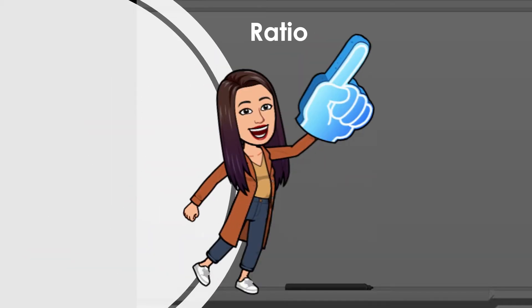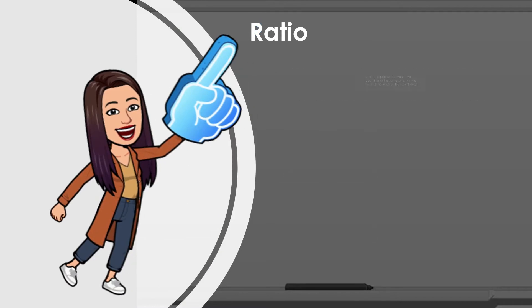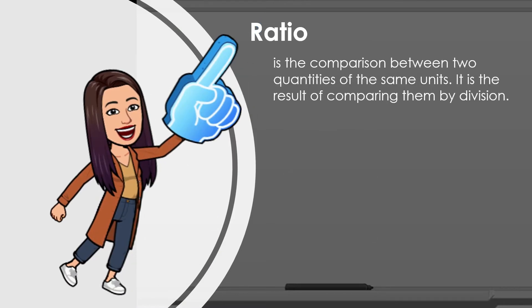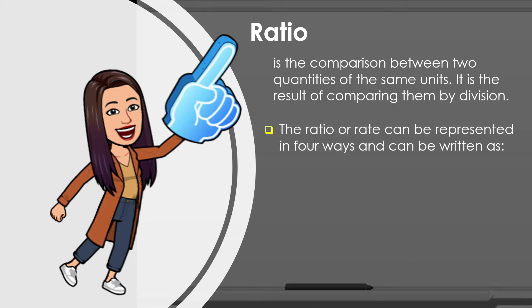First, let us define what is a ratio. A ratio is the comparison between two quantities of the same units. It is also the result of comparing them by division. The ratio or rate can be presented in four ways and can be written as A to B, A is to B, A slash B, and A over B.